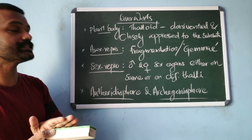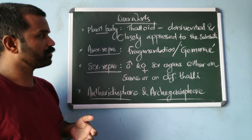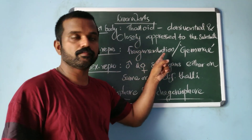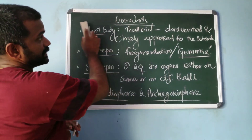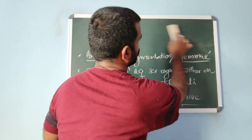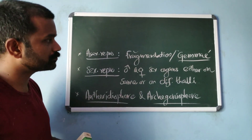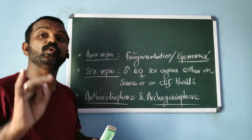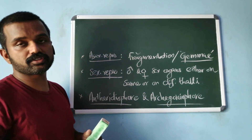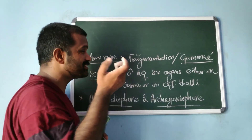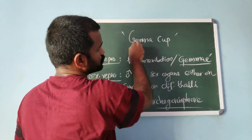Specific points for liverworts: asexual reproduction occurs through fragmentation or through gemma. Gemma are specialized asexual buds produced by liverworts. They are green and multicellular, and are produced inside specialized receptacles called gemma cups.